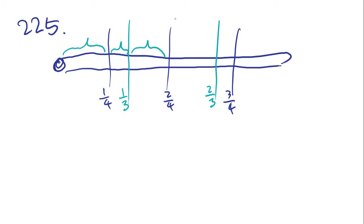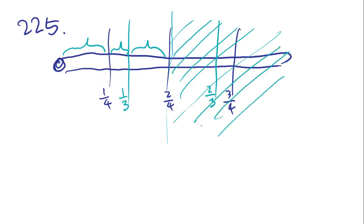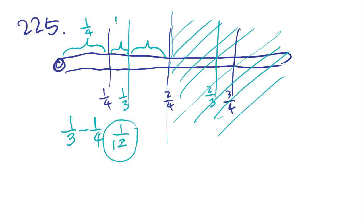The pipe is symmetrical, so we only need to find lengths on the left half. The first piece is one-fourth of the yard. The middle piece is one-third minus one-fourth, which equals 1/12. The remaining piece from one-third to one-half is one-half minus one-third, which equals 1/6.